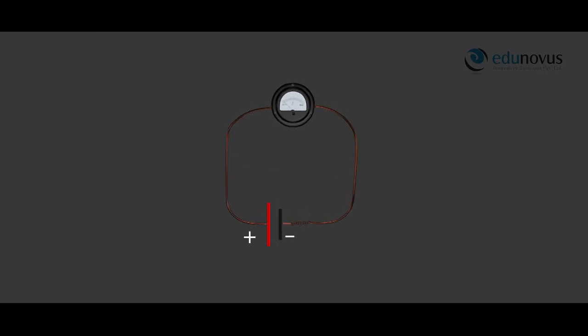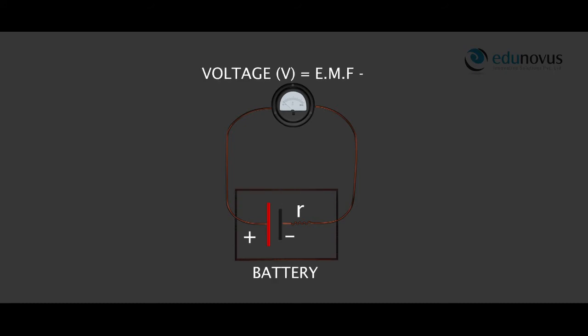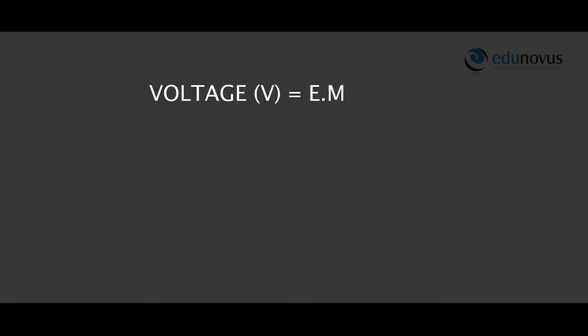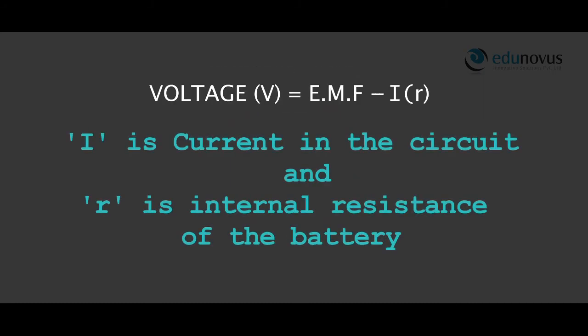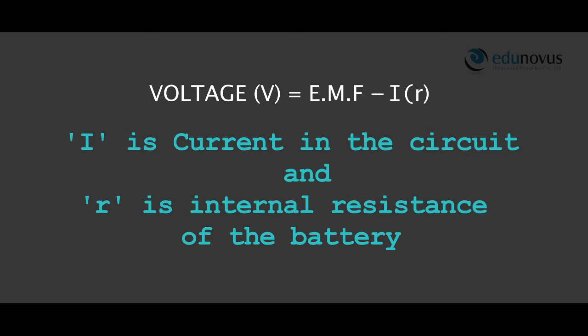This is because the battery in reality has some internal resistance R. So the voltage across the terminals of the battery V is EMF minus IR, where I is the current in the circuit and R is the internal resistance of the battery.